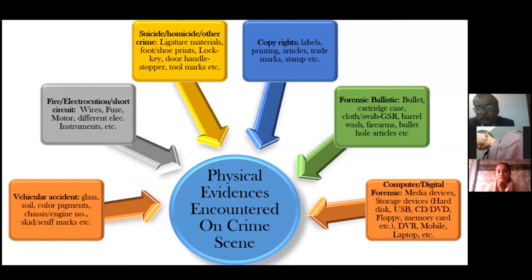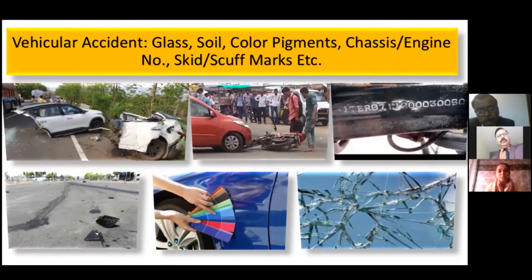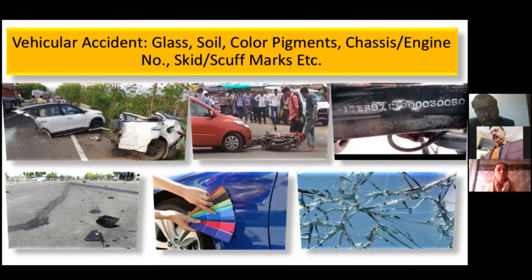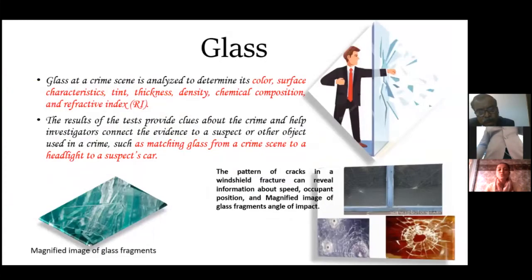Starting from vehicular accidental cases, we commonly encounter color pigment exchange between two colliding vehicles. We also come across engine or chassis numbers in cases where a vehicle has been robbed or stolen, used in another state, and the serial number or engine number has been modified. We then go for restoration of those numbers. Now a brief about glass — why do we study glass in certain cases?